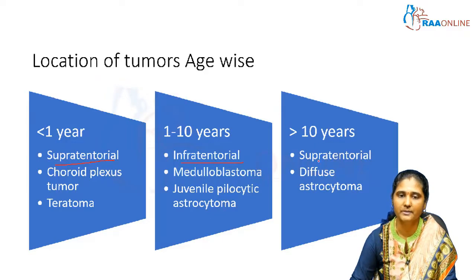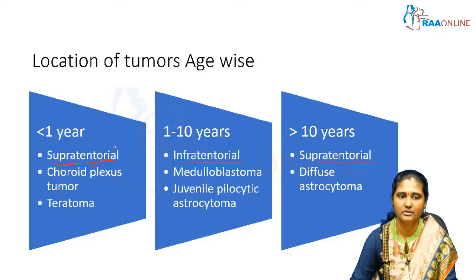In children more than 10 years of age, supratentorial tumours again become predominant, with diffuse astrocytoma being more common. So the pattern to remember is: first supratentorial (under 1 year), then infratentorial (1–10 years), then supratentorial again (over 10 years).